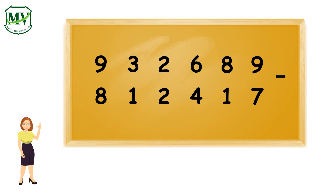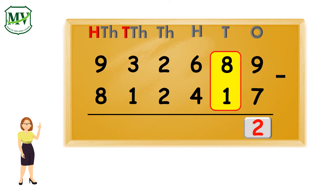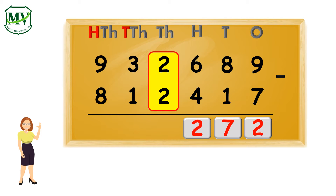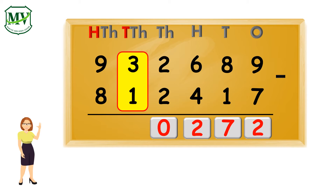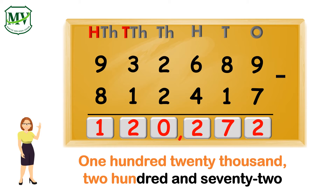Let's subtract these numbers starting in the ones place. 9 minus 7 equals 2. In tens place, 8 minus 1 equals 7. In hundreds place, 6 minus 4 equals 2. In thousands place, 2 minus 2 equals 0. In ten thousands place, 3 minus 1 equals 2. In hundred thousands place, 9 minus 8 equals 1. The answer is 120,272.